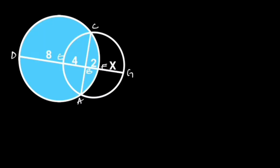Next let's focus on the bigger circle. From the intersecting chord theorem, AB times BC is equal to DB times BF. DB is equal to 8 plus 4, which is equal to 12.